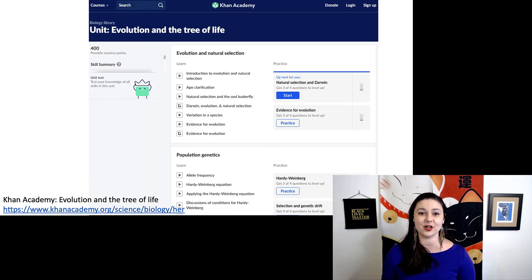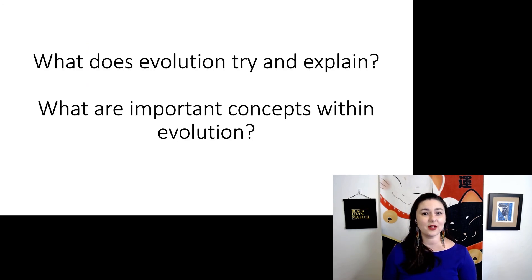Another great place to go is Khan Academy. They have a unit on evolution and the tree of life. You notice they have a couple different sections within here, and there are different units within each section. This is organized a little bit differently than Berkeley Evolution 101. So I highly recommend that you check both out and figure out which one makes more sense to you. So can you explain what does evolution try and explain? And what are some of the important concepts?